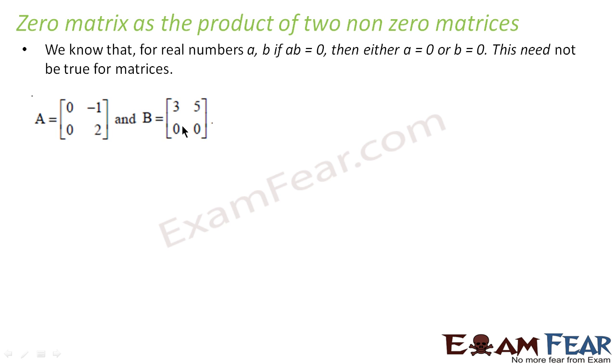Let's take a scenario where we get zero matrix as the product of two non-zero matrices. So if we know that if A and B are non-zero, still we can have AB as zero if A and B are matrices. But in a number system, it is not possible.